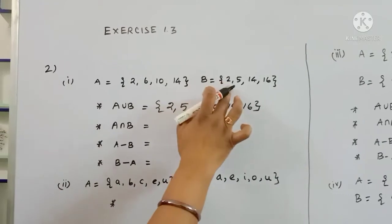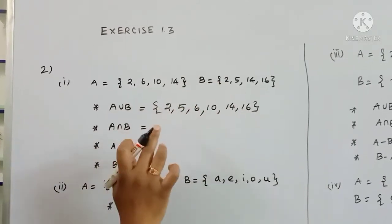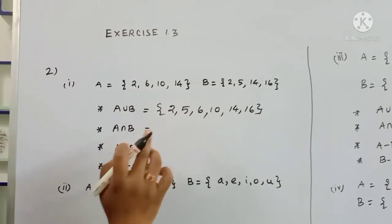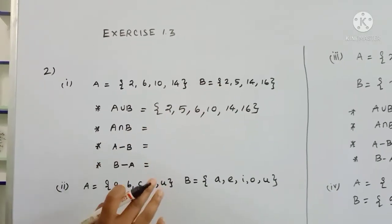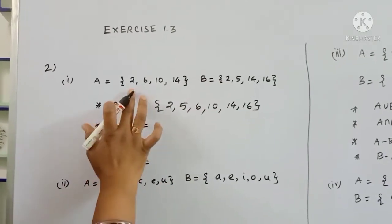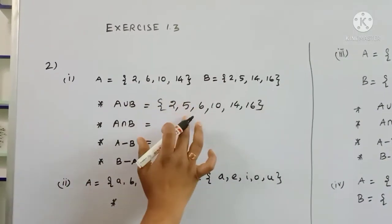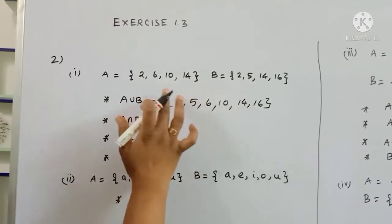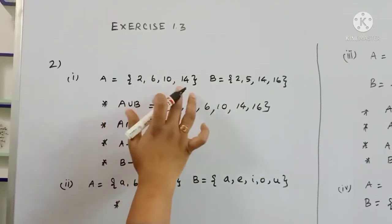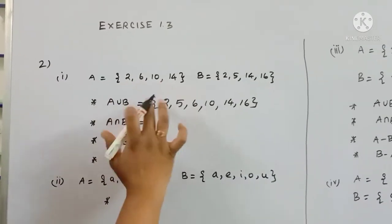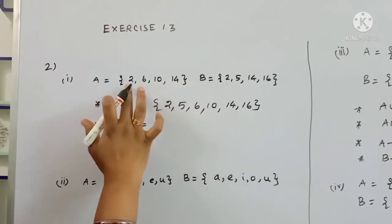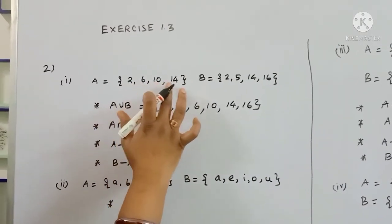Since repetitions are reduced to one, the set becomes: {2, 6, 10, 14}. Elements 5 and 16 are also included.